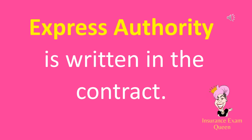Express authority is written in the contract. As a licensed agent, you have three types of authority. Express authority is expressly written in the contract — there is a typed document with a list of things you are allowed to do. Sometimes they say express authority is "written" and sometimes "in the contract," but a contract is a written document, so either wording works.